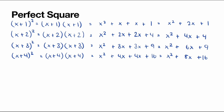So using this pattern, if we have x plus 5 squared, we will get x squared plus 2 times the number inside the bracket, so that's 2 times 5, which gives plus 10x, plus the number inside the bracket squared, so 5 squared, which is 25. Therefore, x plus 5 squared is x squared plus 10x plus 25, and this is also a perfect square.